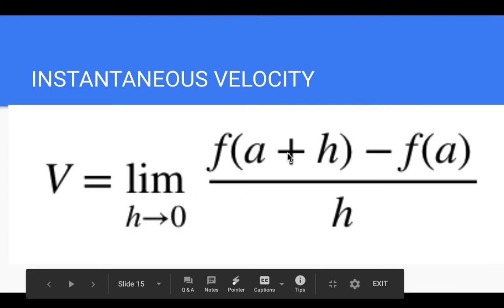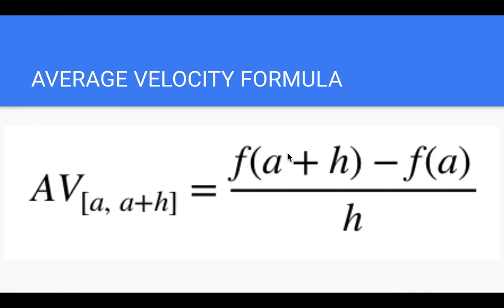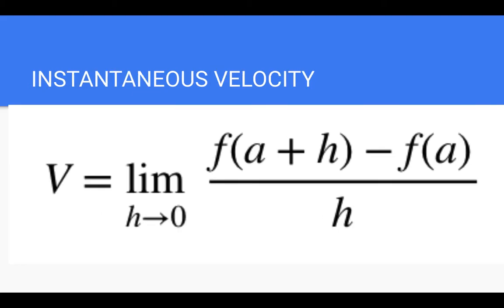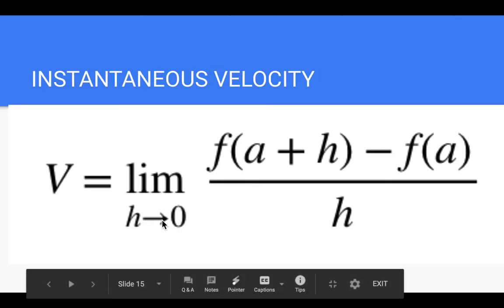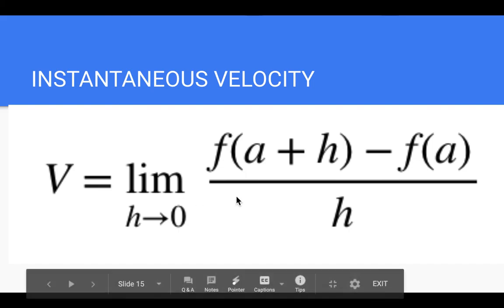So if we take our average velocity formula and we add the criteria—or add taking the limit as h approaches zero—then we have instantaneous velocity. Because once h gets to zero, we have the velocity at a point, not a secant line but a tangent line. And so there we go—that's the instantaneous velocity formula. We're just taking h and making it increasingly small using